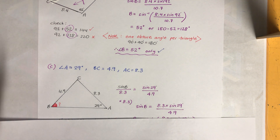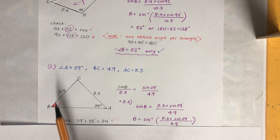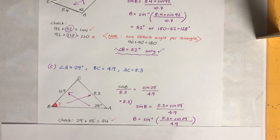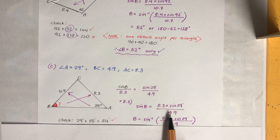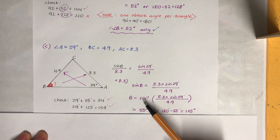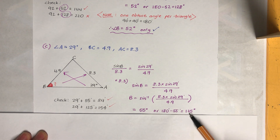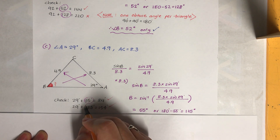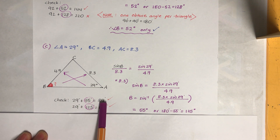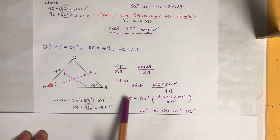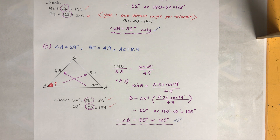Part c: angle A is acute, so we may get two possible angles. Matching: sin B / 8.3 = sin 29° / 4.9. Multiply both sides by 8.3 and apply inverse sine. The acute answer is 55°, and the obtuse answer is 125°. Checking: 29° + 55° = 84° < 180° and 29° + 125° = 154° < 180° — both are valid. So angle B = 55° or 125°.